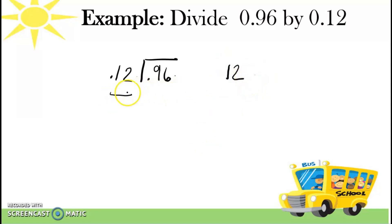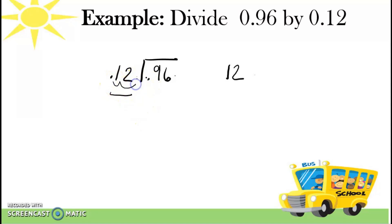Dito na. Paano nangyari yun? Inoom natin from left to right. 1, 2. So napunta natin dito yung decimal point. Then, kung anong ginawa natin sa labas, same thing gagawin natin sa loob. So 1, 2. Para makunta doon yung decimal point.